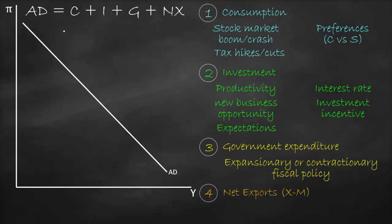The last factor is net exports, which is affected by the exchange rate. If our currency appreciates, our goods become relatively more expensive while foreign goods become relatively cheaper, so net exports decrease and aggregate demand shifts to the left. If our currency depreciates, our goods become relatively cheaper and foreign goods more expensive, so net exports increase and aggregate demand shifts to the right.